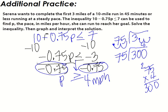Now we need to graph it. So we put 4, 1 bigger, 1 smaller, equal to, so we close it. Is 3 greater than or equal to 4? No. Is 5 greater than or equal to 4? Yes. And so she has to do it in 4 miles per hour or faster to make her goal of 45 minutes.